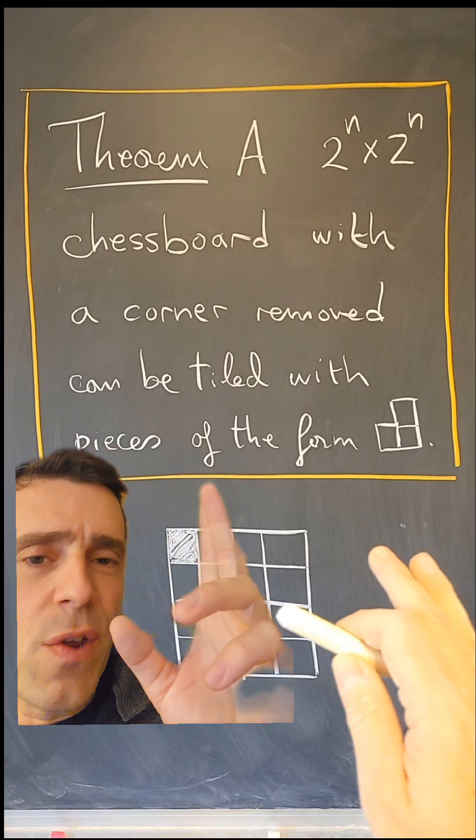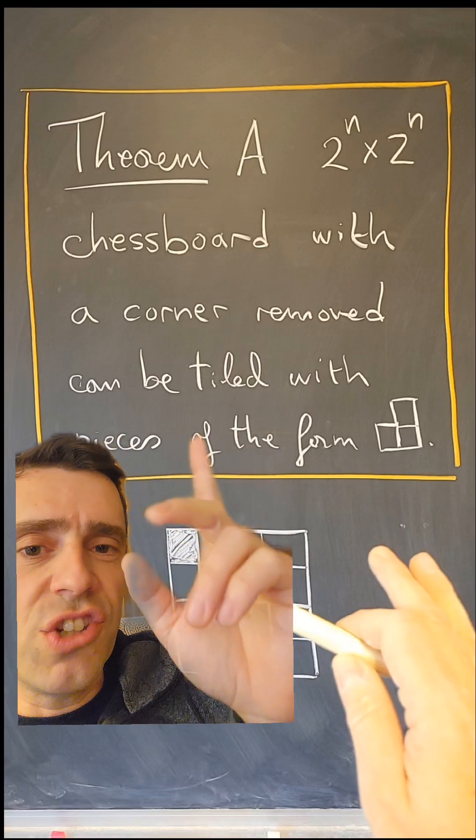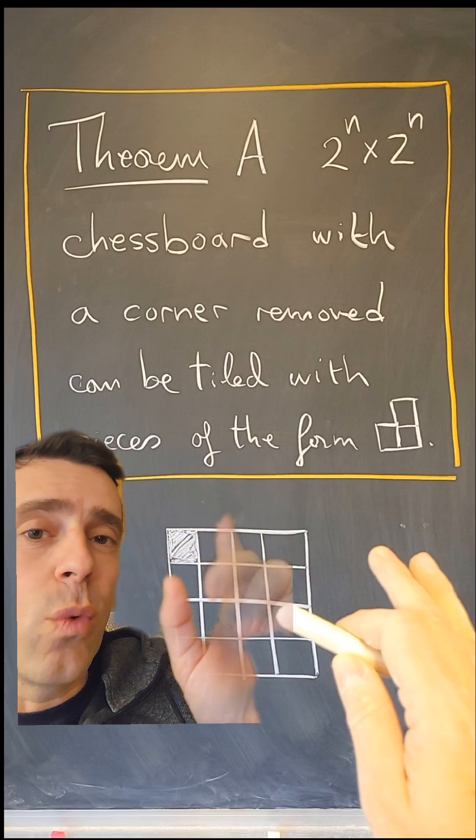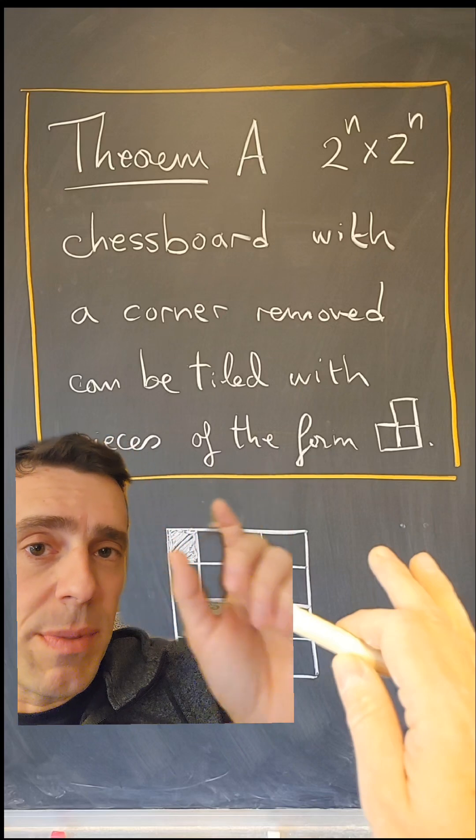I recently posted a proof of this theorem that a 2 to the n by 2 to the n chessboard with one corner removed can be tiled with tiles of the form like that one, a three square L-shaped tile.